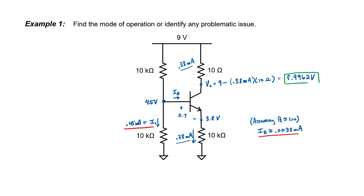Now that we've found our three voltages, what can we conclude? We have a forward biased P-N junction here, and we didn't reach a contradiction, so this transistor is not in the cutoff mode. I found that my base current was negligible, so my 4.5 volts is accurate. And thirdly, I see that the voltages are properly arranged from high to low — the collector is higher than the base, and the base is higher than the emitter. Therefore, I can conclude that this transistor is in the forward active mode.